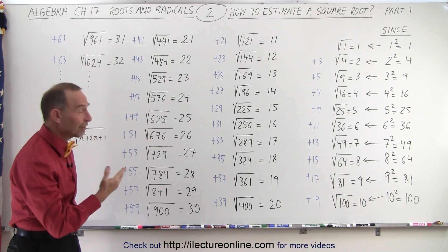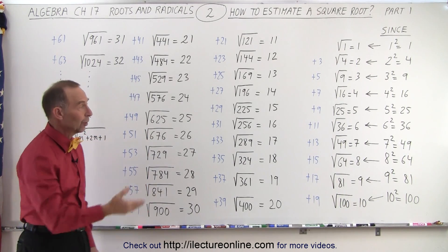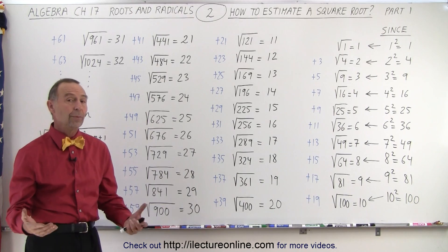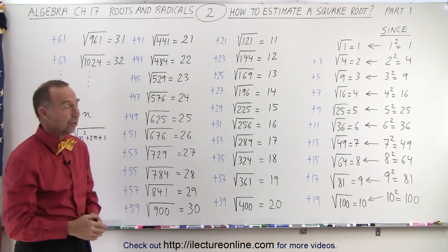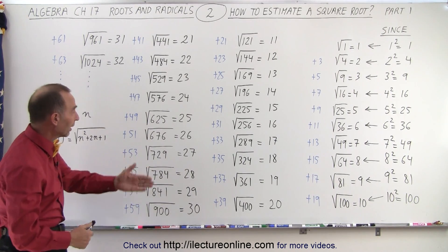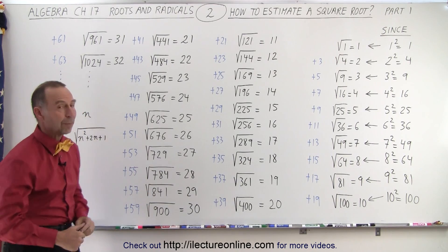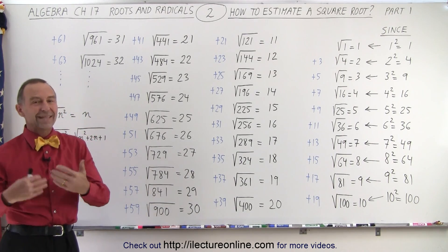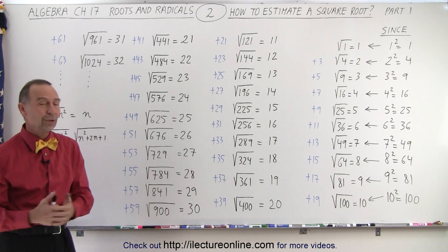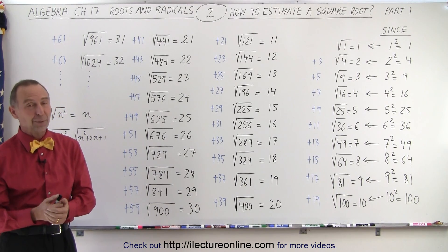And it can help us figure out quickly, without a calculator, what the square root is for a number between 0 and 1,000, basically, or between 0 and 1024. That gives us all the square roots all the way up to 32, or at least the answer to the square root all the way up to 32.